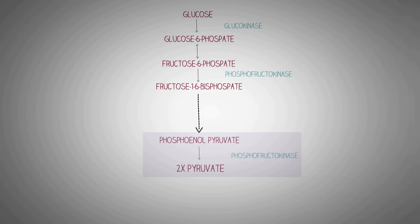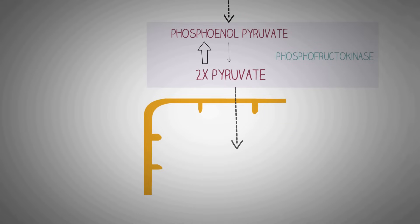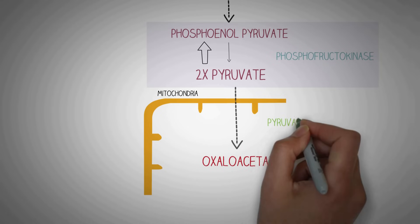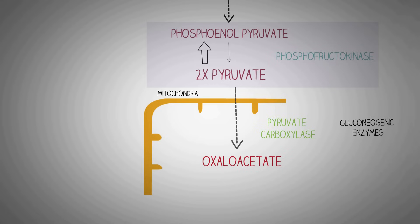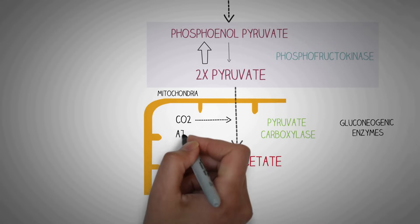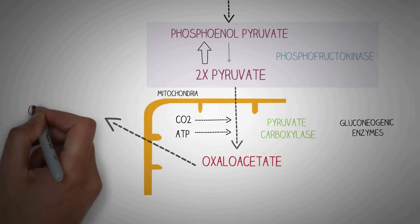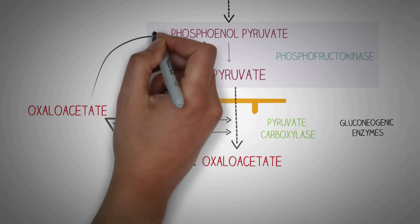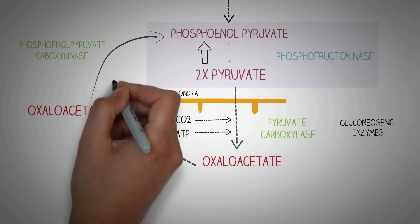The first irreversible reaction we need to reverse is the conversion of pyruvate back to phosphoenol pyruvate. For this, pyruvate first travels to the mitochondria through specific carrier proteins. In the mitochondria, pyruvate is converted to oxaloacetate by the enzyme pyruvate carboxylase — the gluconeogenic enzymes shown in green are expressed during fasting. In this reaction, carbon dioxide and ATP are used. Oxaloacetate is then transferred back to the cytoplasm, where the enzyme phosphoenol pyruvate carboxykinase converts it to phosphoenol pyruvate.